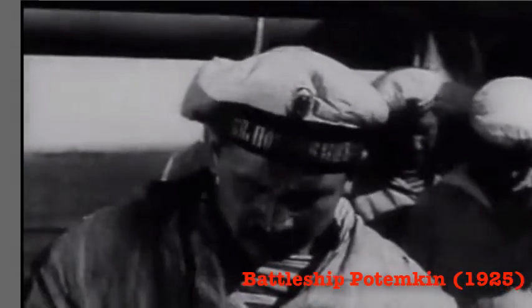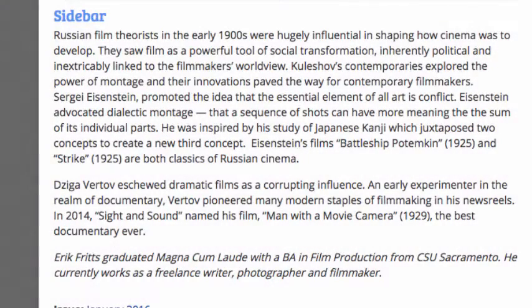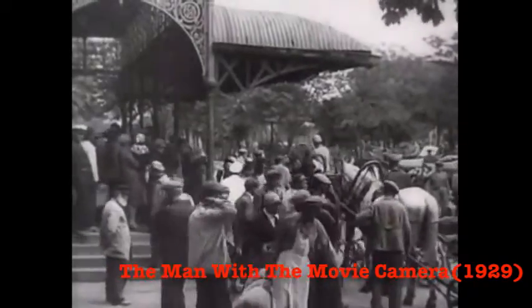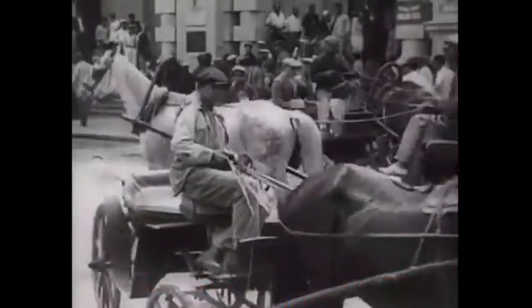Eisenstein's films Battleship Potemkin (1925) and Strike (1925) are both classics of Russian cinema. Dziga Vertov eschewed dramatic films as a corrupting influence. An early experimenter in the realm of documentary, Vertov pioneered many modern staples of filmmaking in his newsreels. In 2014, Sight and Sound named his film Man with a Movie Camera (1929) the best documentary ever.